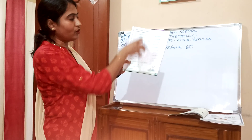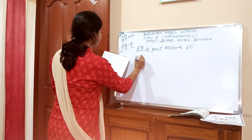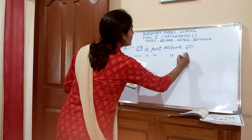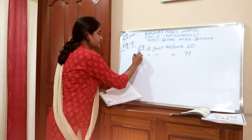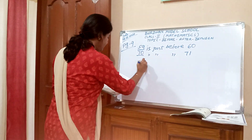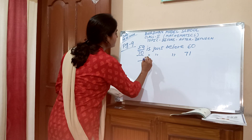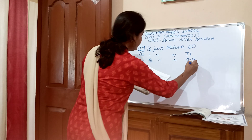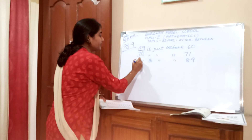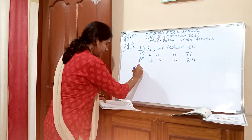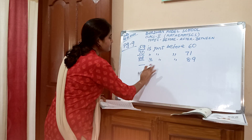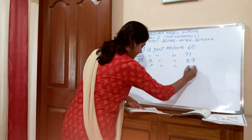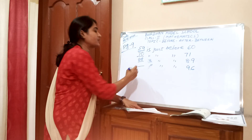Now, solve all of this. Please follow me. Dash is just before 71 — so 71's before number is 70. Please do with me. Dash is just before 89 — 89's before number is 88. Dash is just before 96 — so 96's before number is 95.